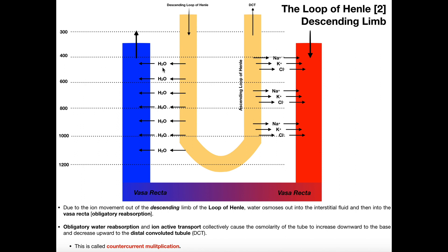Water reabsorption is very important — it's probably the most important function of the loop of Henle. If we don't have sufficient reabsorption of water, we dehydrate. Remember, all of your cells have to have water in order to function optimally. So this water reabsorption is very important, and this system was called countercurrent multiplication.